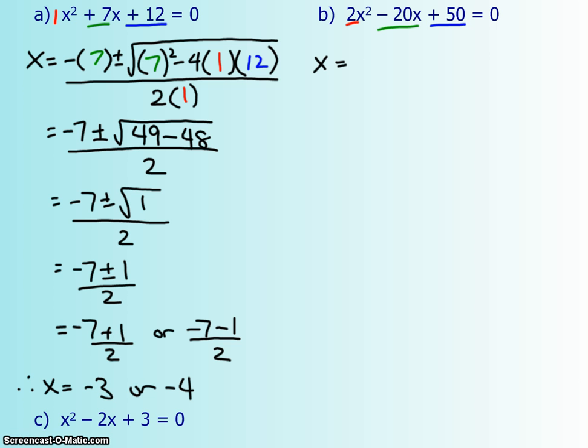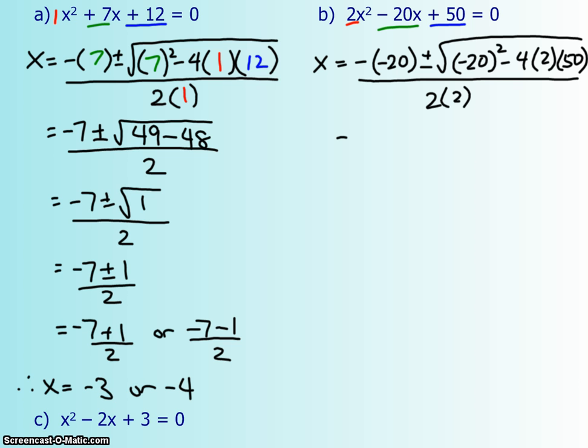So x equals negative b, and that's negative 20, not negative 20x. Plus or minus negative 20 in brackets squared. I'd like to put the brackets beside the negative 20, because if you didn't have the brackets, it would actually be negative 400 instead of positive 400. 4 times your a times your c, all over 2 times a. Equals positive 20, and positive 400 minus 4 times 2 times 50 gives you another 400, all over 4.